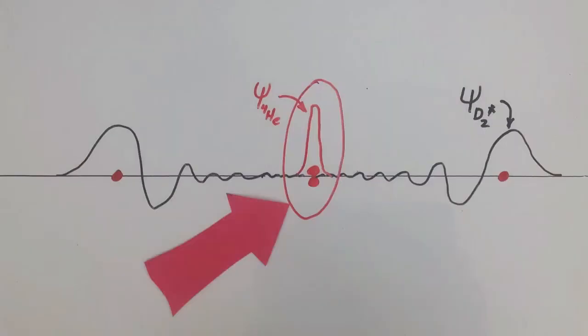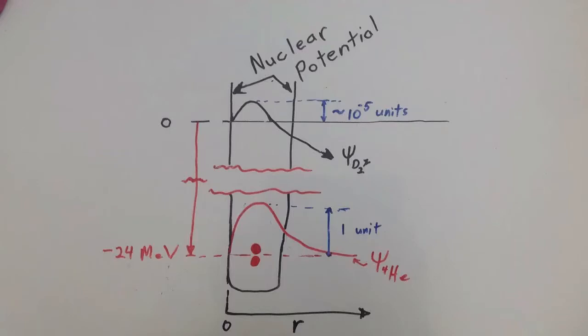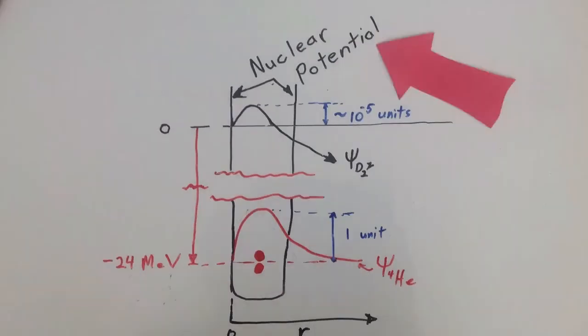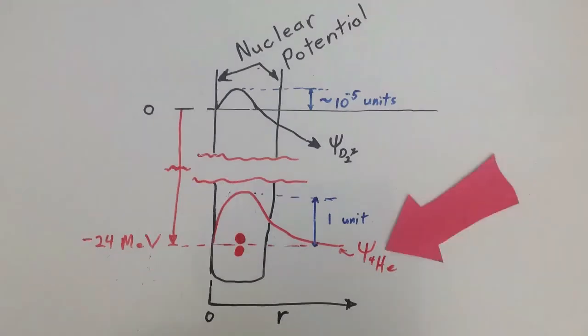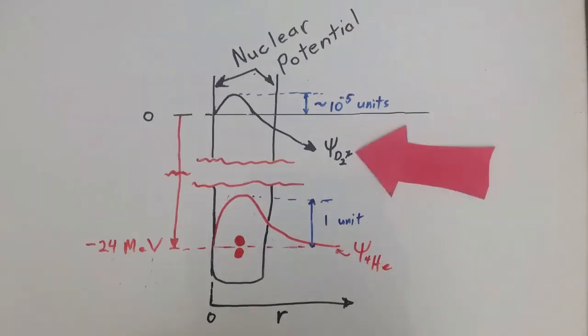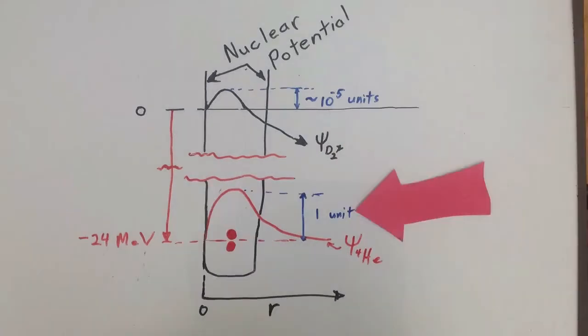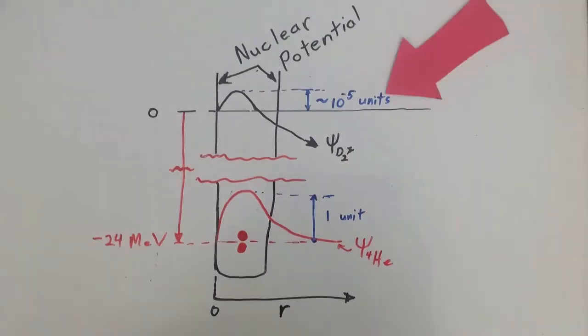We focus on the nuclear potential where the D2 star state overlaps the helium-4 state. The sketch shows the nuclear potential modeled as a square well, with the helium state at minus 24 MeV and the D2 star state defined as zero. Note the relative size of the wave functions: the helium at an arbitrary unit of one and the D2 star at about 10 to the minus five units.